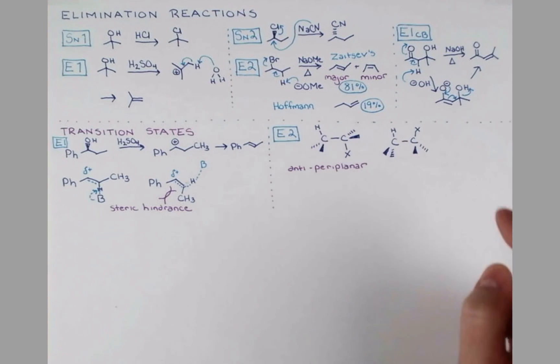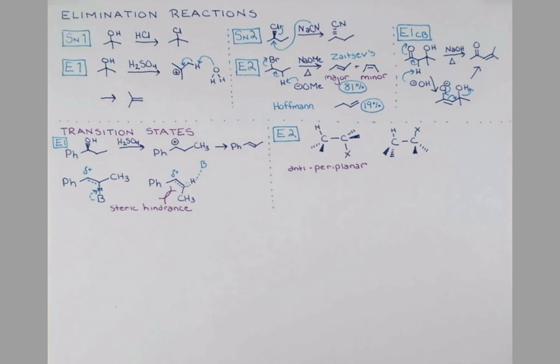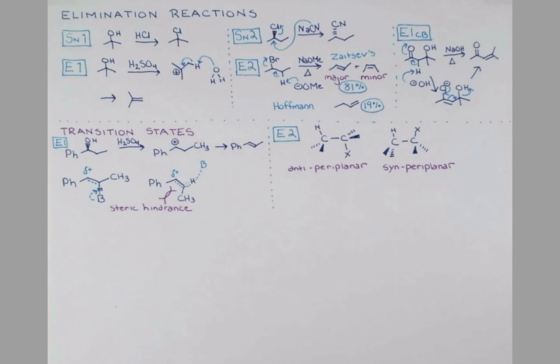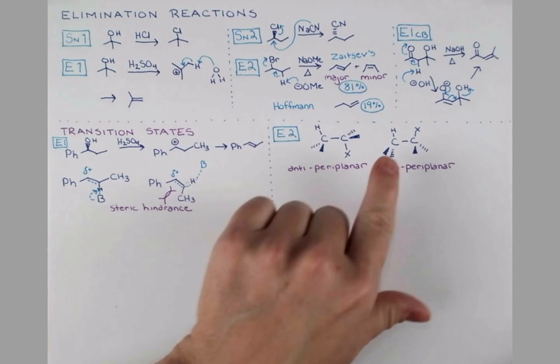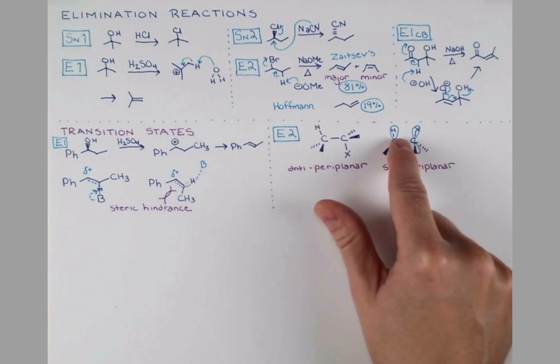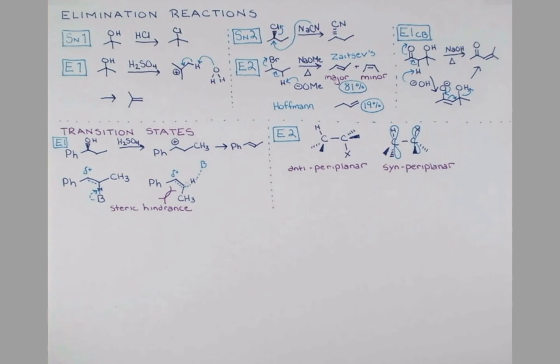The groups can also be syn-periplanar. And so, here the hydrogen and the leaving group are, again, in the same plane up here, but they're on the same side of the molecule. The reason that periplanar geometry is so important relates to molecular orbitals. I'm going to draw these to look like p orbitals. They're sp hybrid orbitals at this point that are turning into p orbitals, but the p orbital is just a little easier to draw. So, I'm going to do that right now. So, this hydrogen atom is in its orbital. And this leaving group is in an orbital facing the same direction. As we're deprotonating here, we're starting to form a new pi bond.